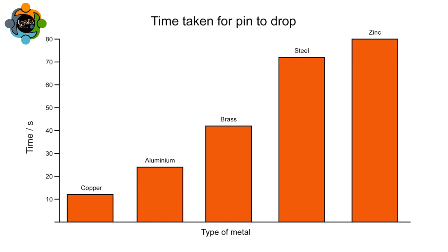The results can be illustrated by drawing a bar chart. For these results, what can be concluded about the relative conductivity of these metals? The drawing pin that dropped the quickest was from the copper rod at 12 seconds.